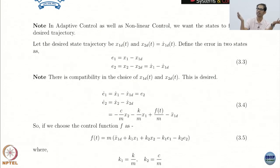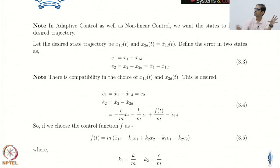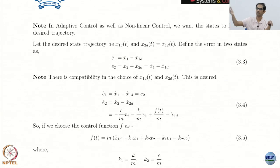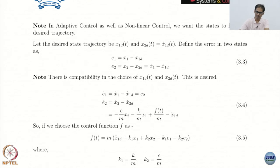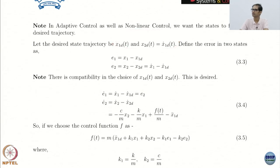The trajectories cannot be some ridiculous trajectories. For example, if your dynamical system is a second-order system and your trajectory is derived from a fourth-order system, it does not make sense — you cannot track it. So basically these are called matching conditions, and the trajectory must satisfy this requirement.